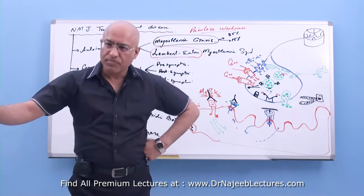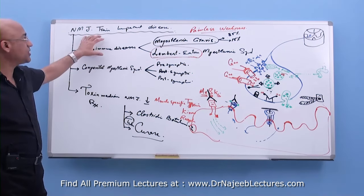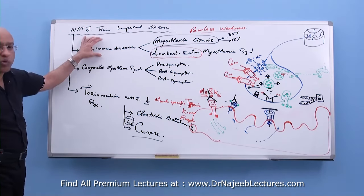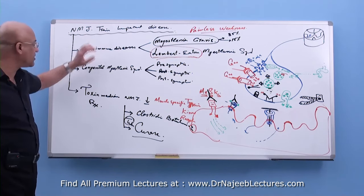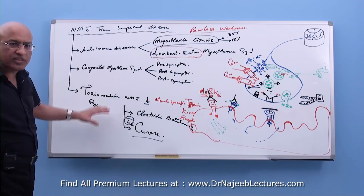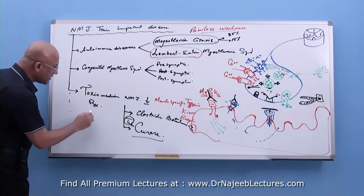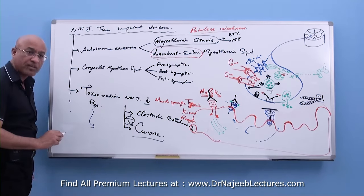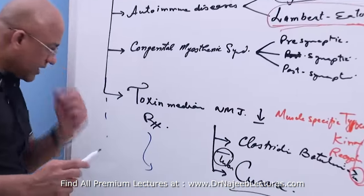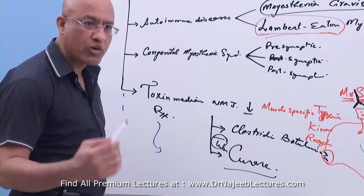So this was an introduction to the diseases related with the neuromuscular junction. Remember: number one, the most important group is autoimmune diseases; number two is congenital diseases; number three is toxin-mediated. And also, some drugs as a side effect impair neuromuscular transmission in some patients.